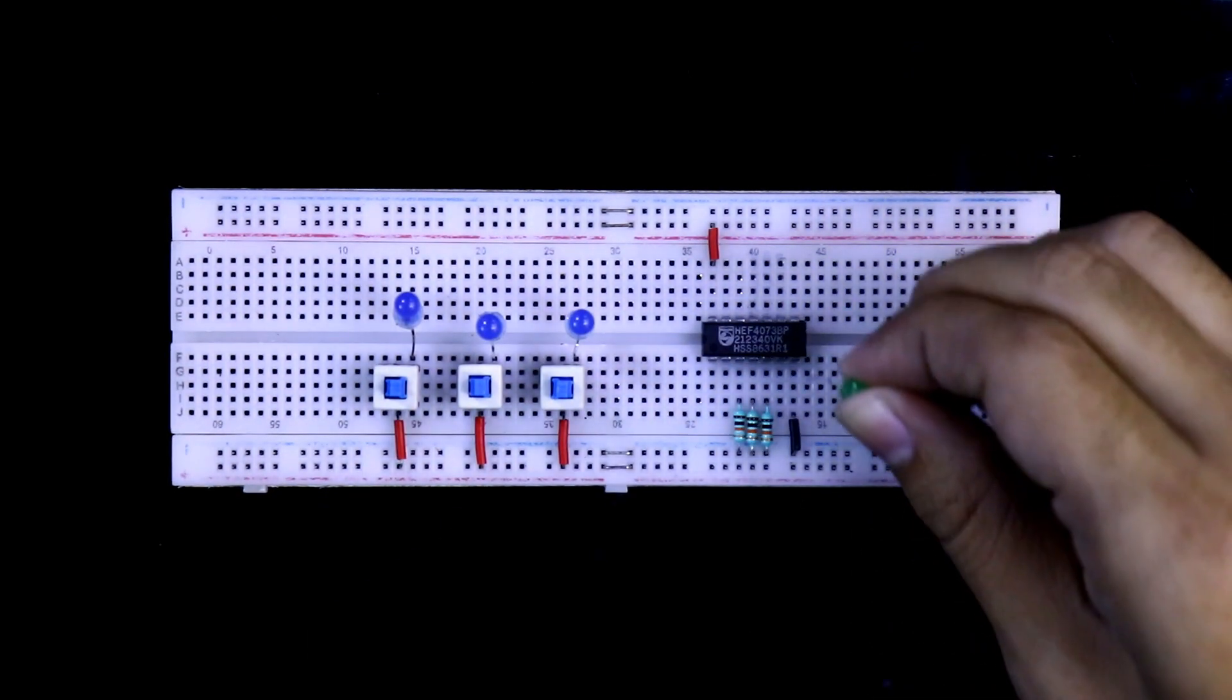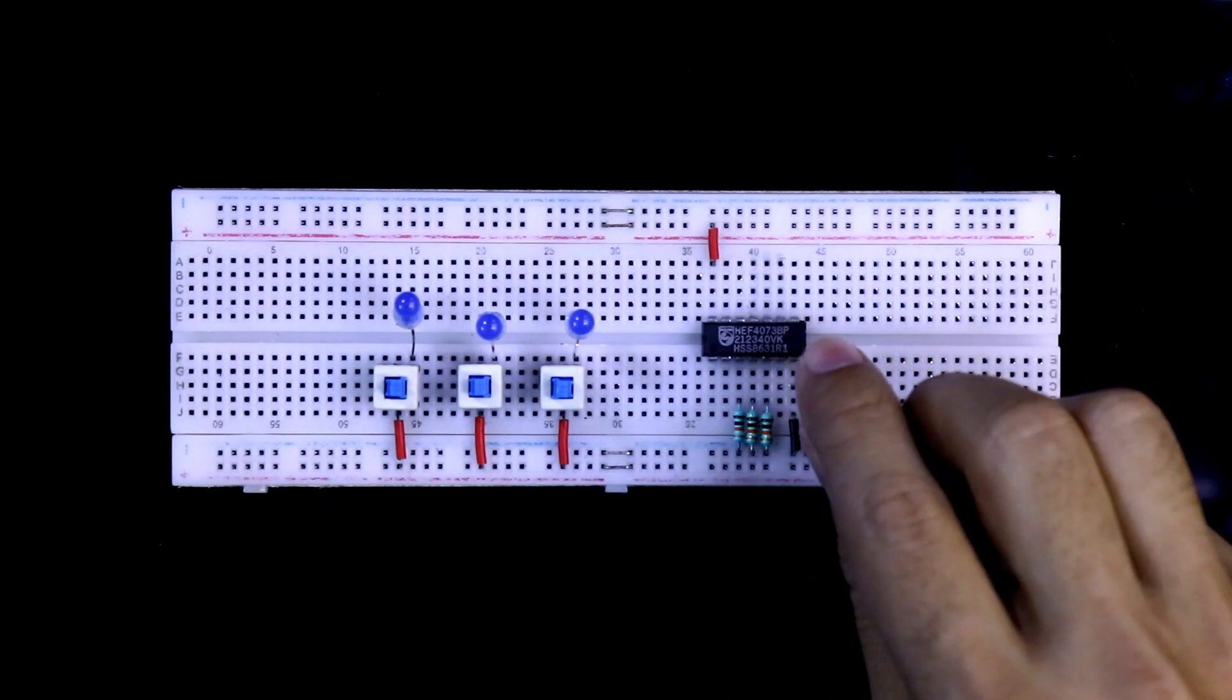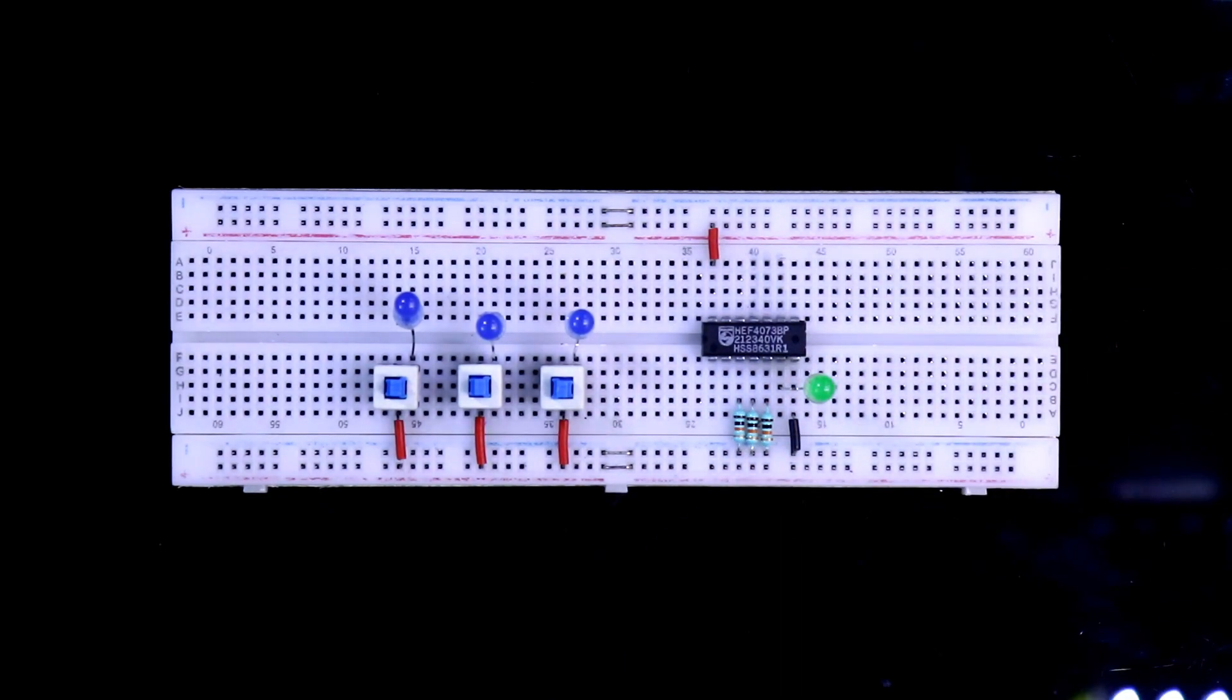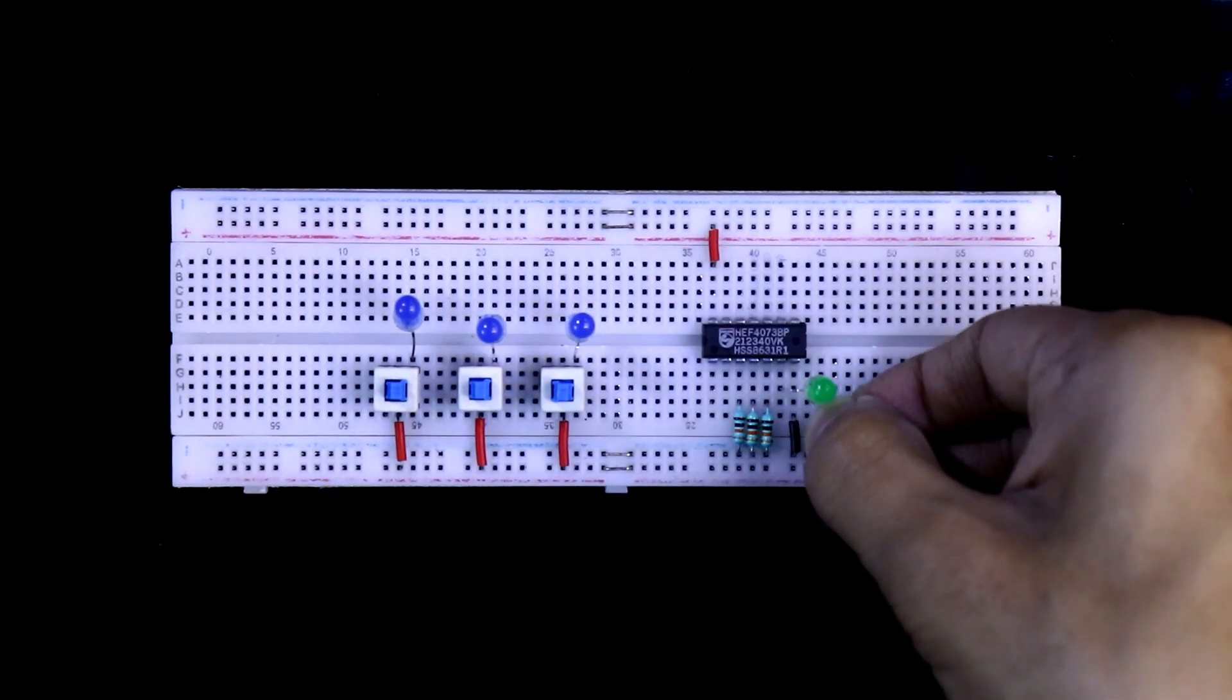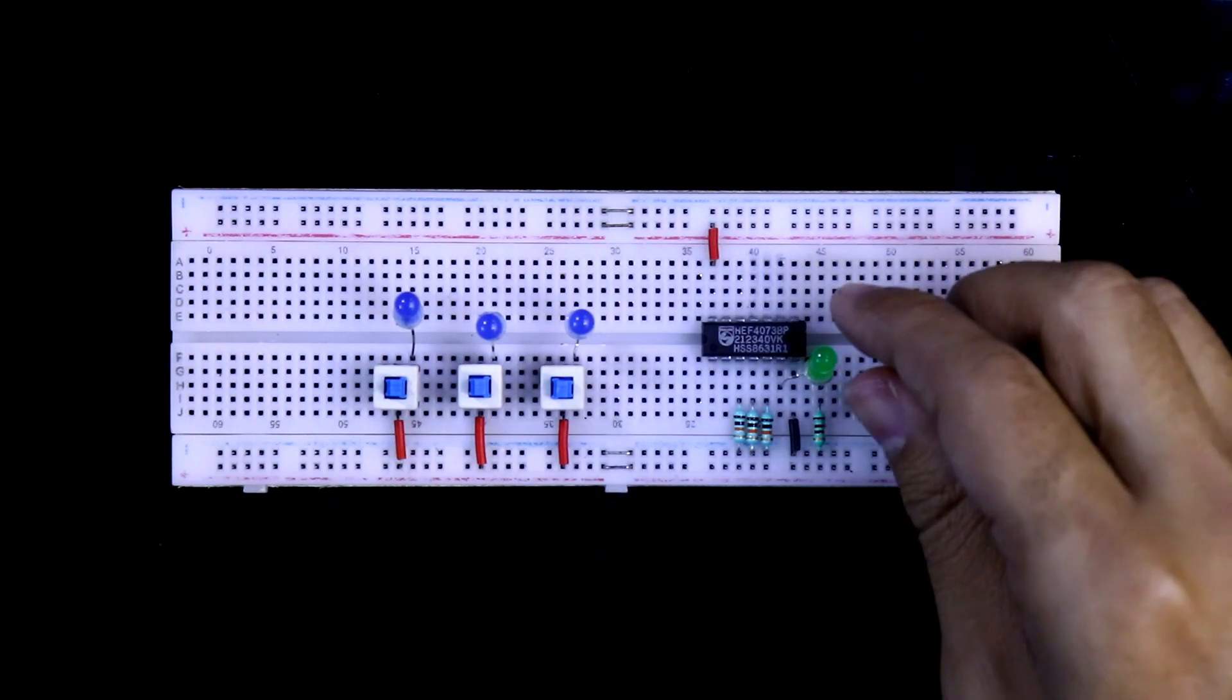Putting the output LED. The positive pin is connected with pin number 6, and with the negative pin, I have to connect a 220-ohm resistor.